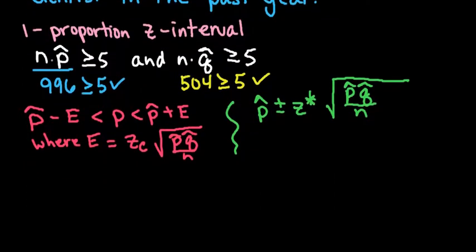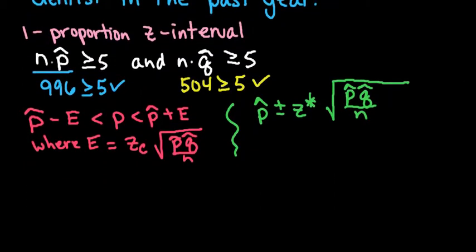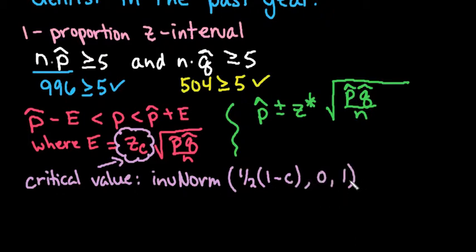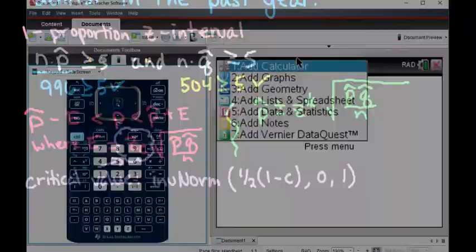We're going to use these formulas, and I'm going to show you how to use the Nspire to generate the critical value. This is the z-score that corresponds to that level of confidence. What we're going to do to find this in our Nspire is use inverse norm. And since 90% is in the middle, we're going to do one-half of one minus our level of confidence as a decimal, comma zero, comma one. Those are the values we're going to put in, where zero is the mean and one is the standard deviation since we're dealing with a z-score.